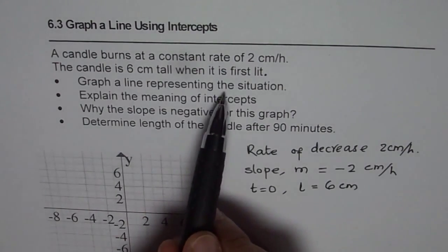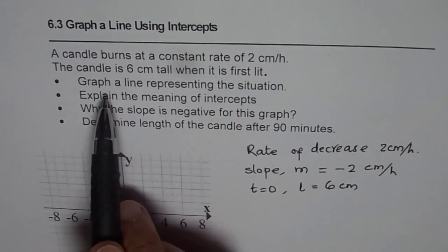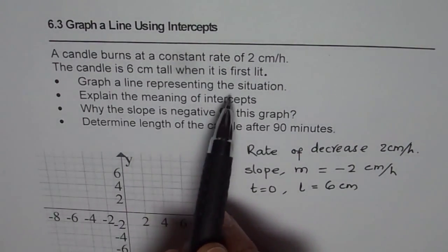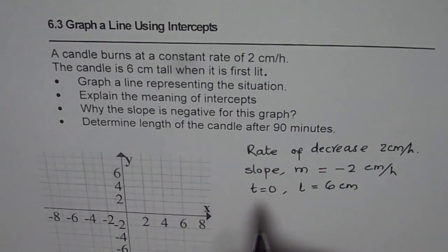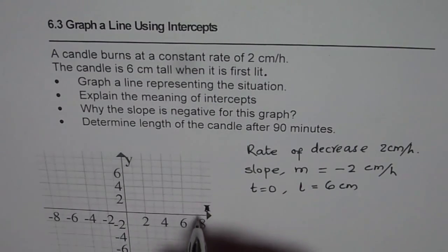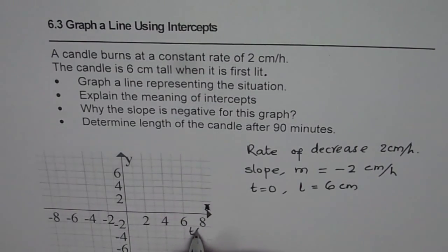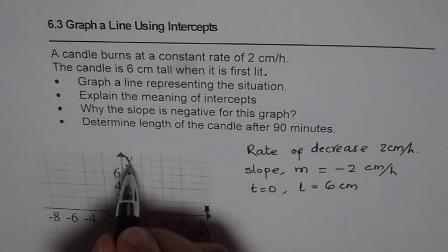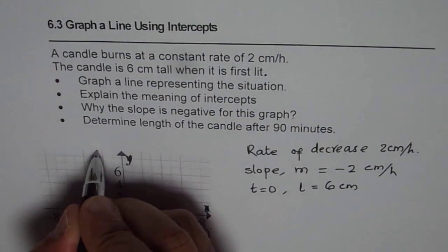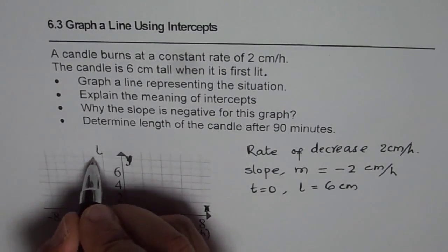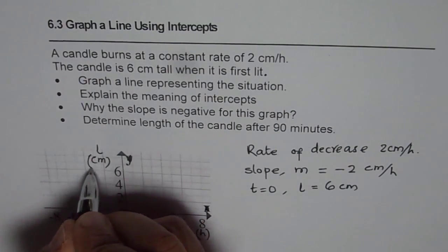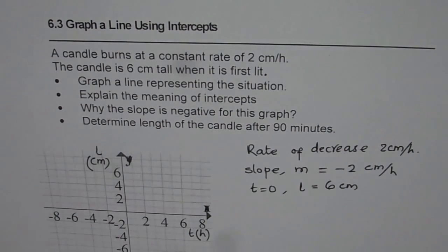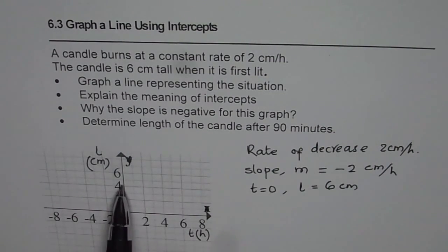Now, graph a line representing this situation. To graph this line, we have to define our variables. So let us say, along the x-axis, we have time. So we will put, instead of x, we will put t in hours along the x-axis. And on the y-axis, we will put length of the candle in centimeters. So time is independent variable and length is dependent on time in this particular case.